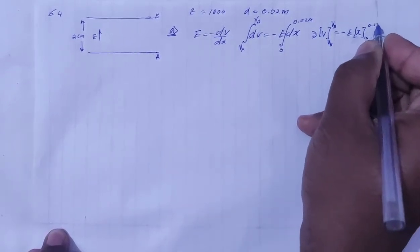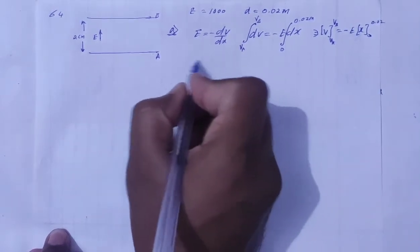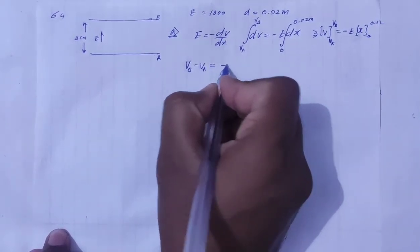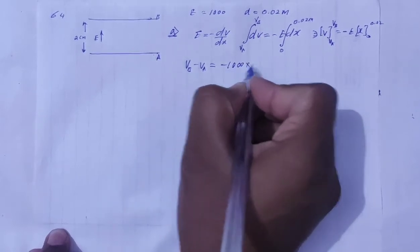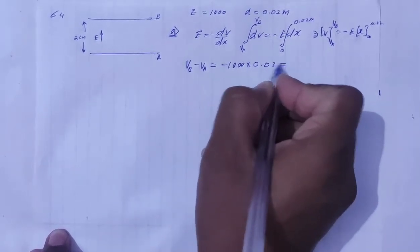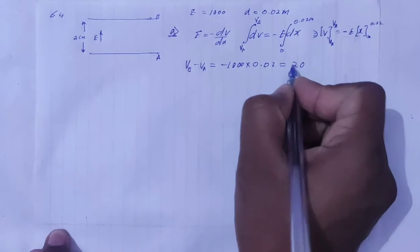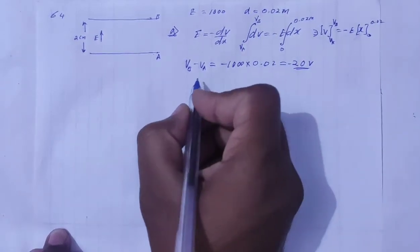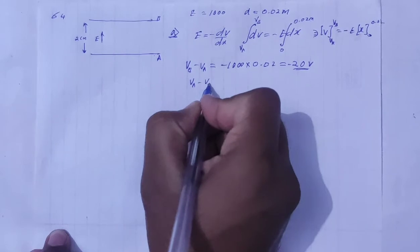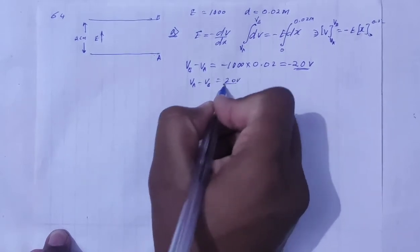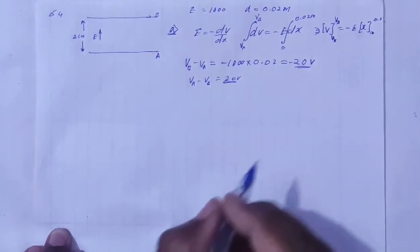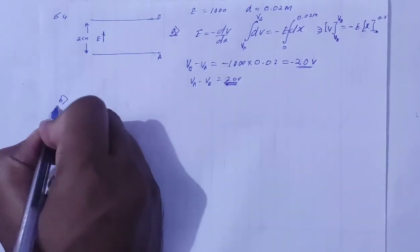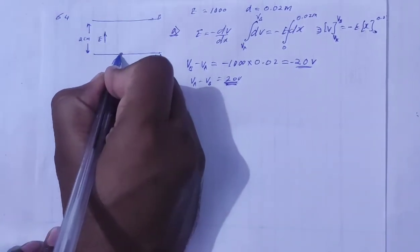So V_B minus V_A equals minus 1000 into 0.02, which gives minus 20 volts. Therefore V_A minus V_B equals plus 20 volts. The potential difference magnitude is 20 volts.